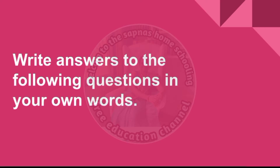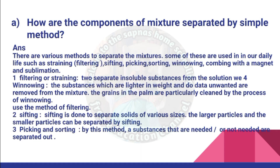How are the components of a mixture separated by simple methods? There are various methods to separate mixtures. Some of these are used in our daily life: straining, filtering, sifting, picking, salting, winnowing, combing with a magnet, and sublimation. Filtering or straining is used to separate insoluble substances from a solution. Winnowing removes lighter unwanted substances from the mixture. Sifting is done to separate solids of various sizes. By picking and sorting, substances that are needed or not needed are separated out.